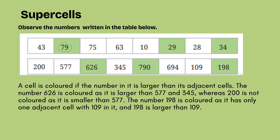Similarly, if we compare 75 and 79, obviously 75 is less than 79, therefore it is not a supercell. When 63 is compared with 75 and 10, 63 is not greater than 75, therefore this is not a supercell. When we compare 10 with its two side numbers, it is less than both, so this is not a supercell. When we compare 29 with 10, 29 is greater than 10. And when we compare 29 with the next number 28, 29 is greater than 28. Therefore, 29 is a supercell.